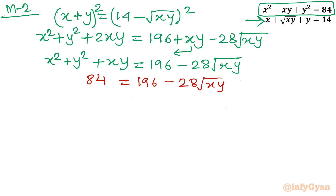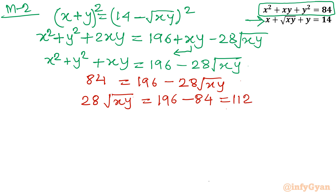Substituting equation 1: 84 = 196 − 28√xy. Rearranging, 28√xy = 196 − 84 = 112. Dividing both sides by 28 gives √xy = 4, and squaring gives xy = 16.